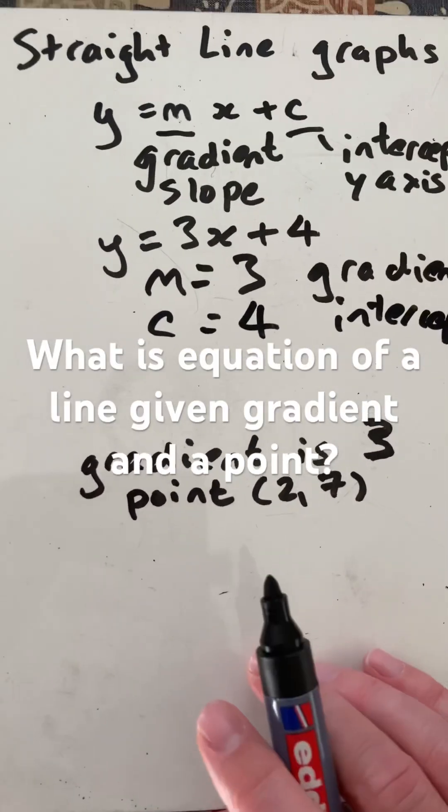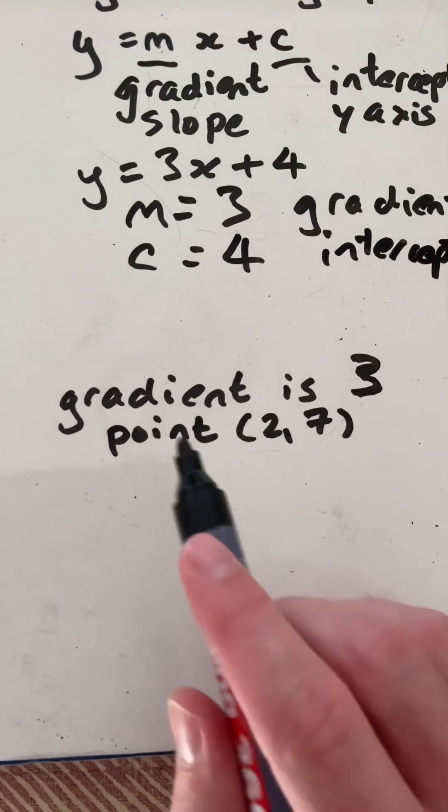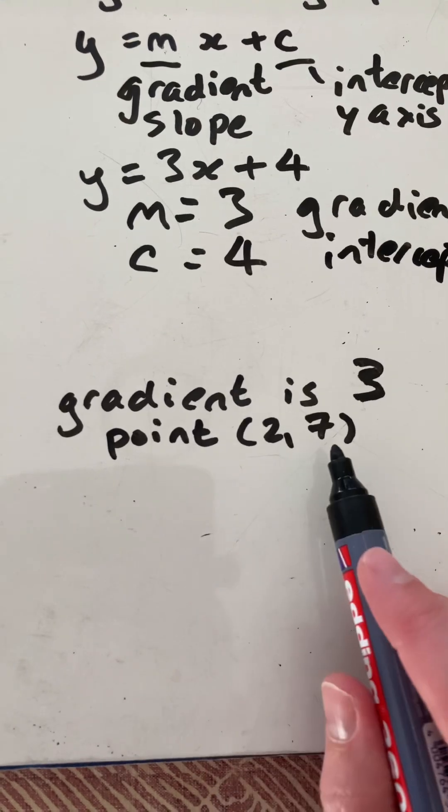Now you might get a question where you don't have it in the general form, but you need to write it in that case. So we're told that the gradient is 3, but it goes to the point (2, 7).